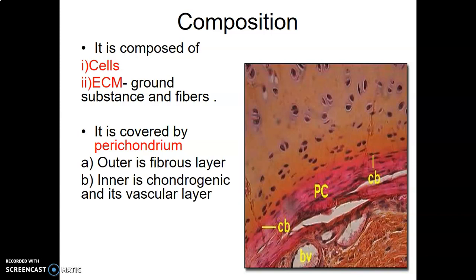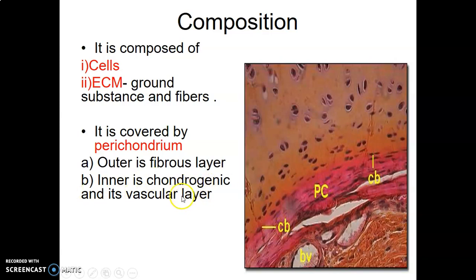Cartilage is covered by perichondrium. Perichondrium has two layers: the outer layer, which is called the fibrous layer, and the inner layer, which is chondrogenic — able to lay down more of the cartilage matrix — and also a vascular layer. So outer fibrous and inner vascular or chondrogenic. This is where regeneration occurs, in the chondrogenic layer.